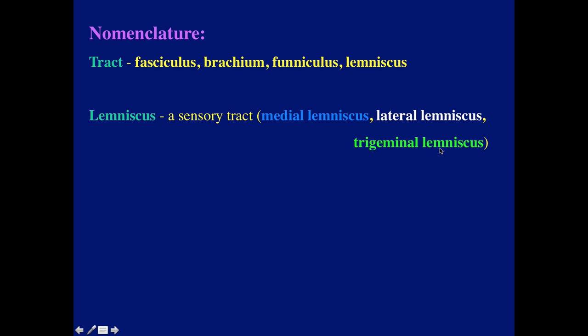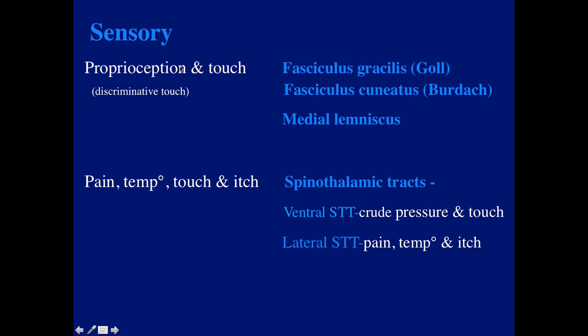The sensory tracts: proprioception and discriminatory touch are mediated by the fasciculus gracilis, also known as Goll, and the fasciculus cuneatus, also known as Burdach, and the medial lemniscus. Pain, temperature, touch, and itch are transmitted via the spinothalamic tract. The ventral spinothalamic tract is for crude pressure and touch, and the lateral is for pain, temperature, and itch.